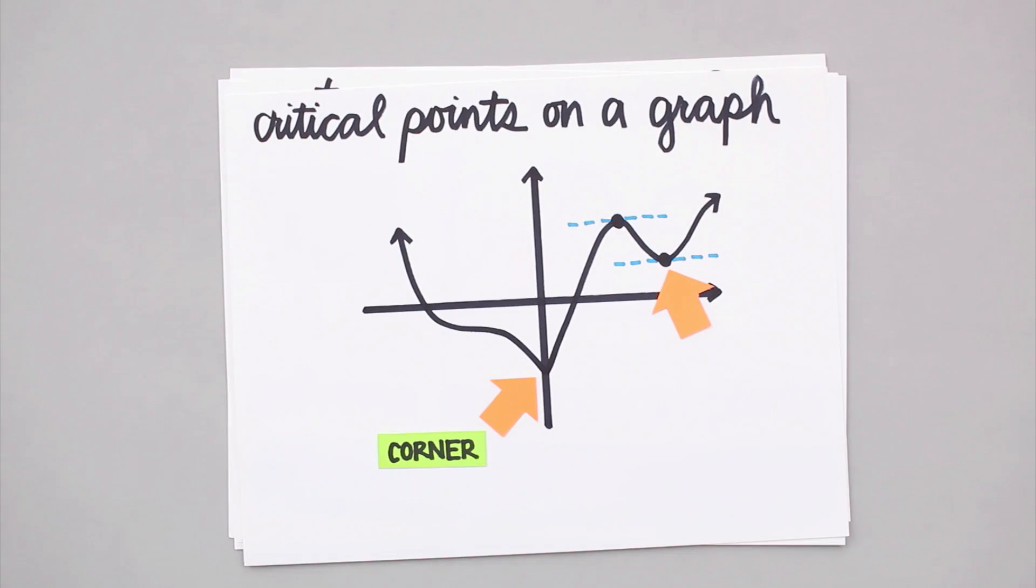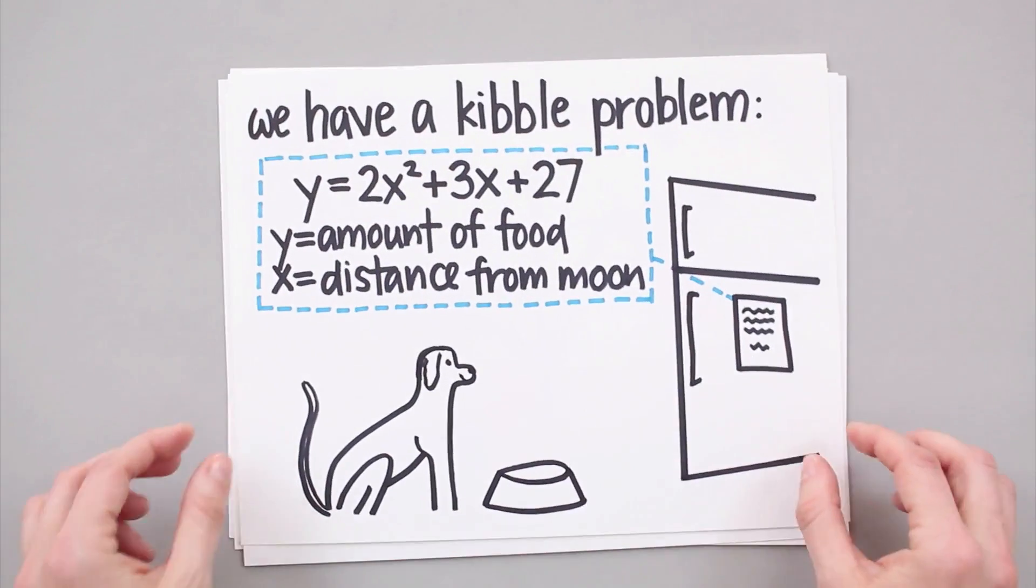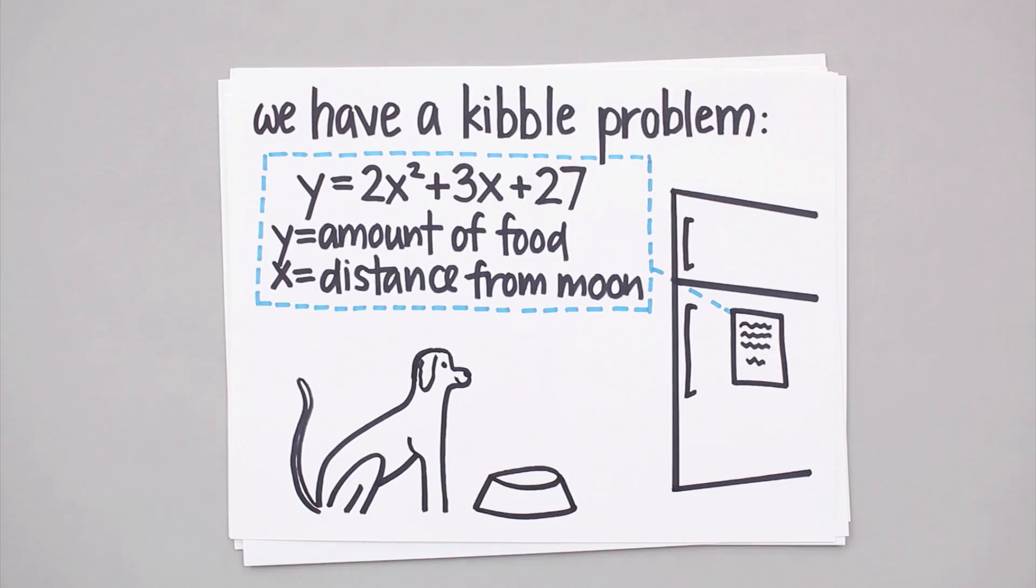Let's imagine for a second that we don't have a graphing calculator, and we're pet-sitting for our neighbor's dog, and instead of telling us how much to feed the dog, our nerdy neighbor just left us with this function, which gives us the number of kibble bits to feed the dog depending on the current distance from the moon. We have no idea how to measure the current distance from the moon, so we just decide to find the minimum amount of food her dog needs.